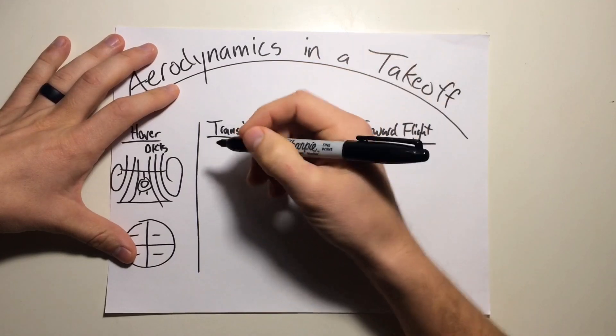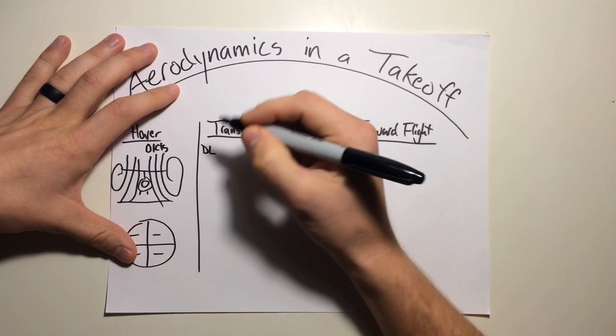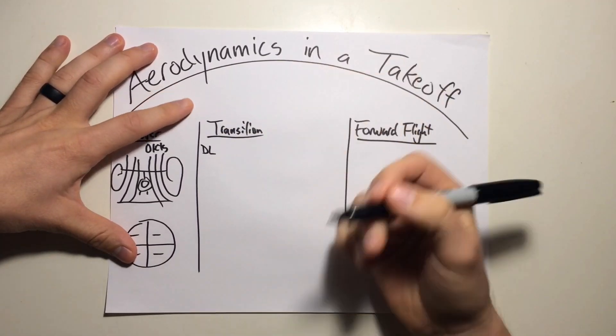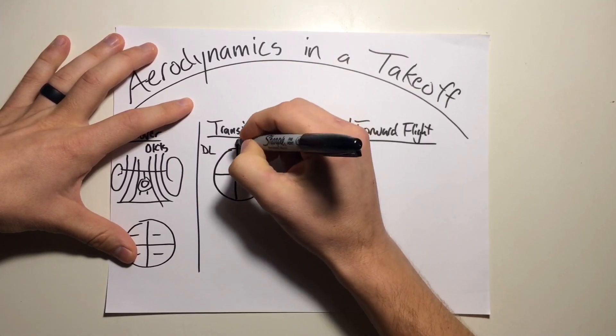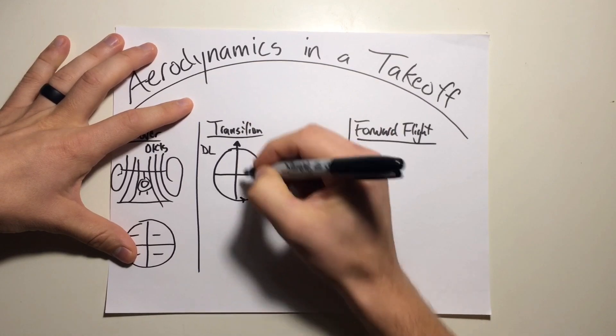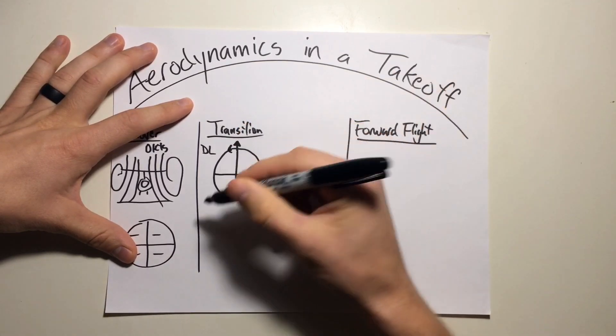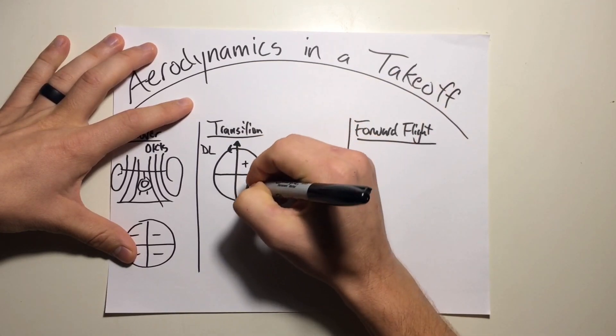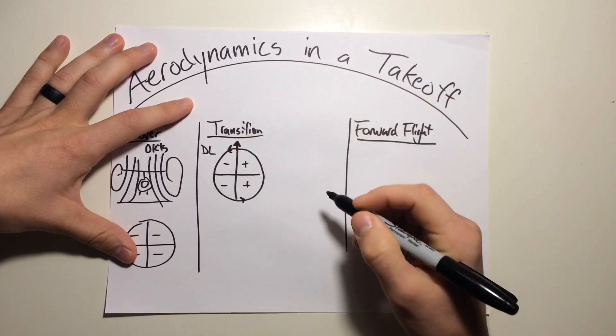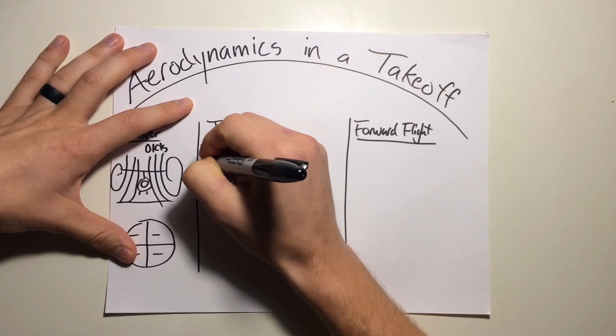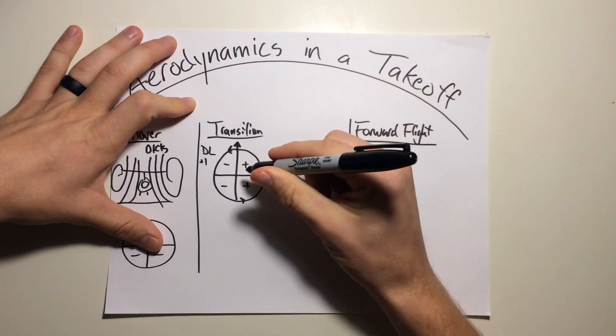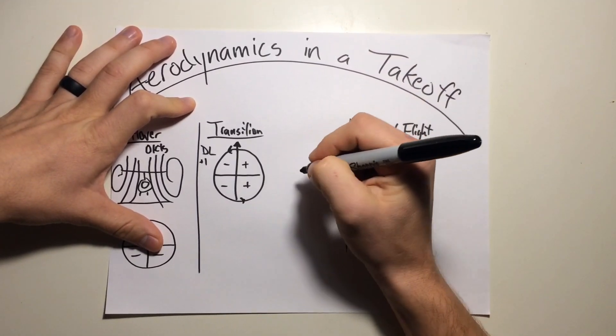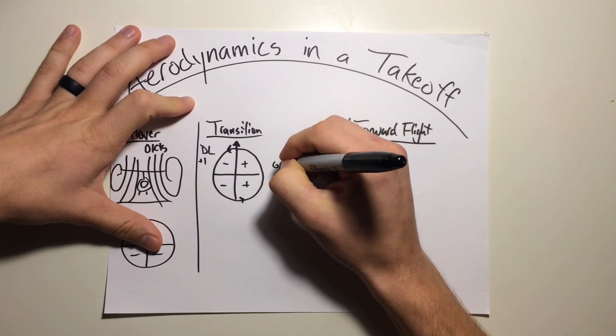As we start to transition forward, we're going to get into things like dissimetry of lift. It's a difference in lift in the advancing and retreating portion of the rotor disc. So if our rotor system is going this way, we'll say counterclockwise just like in all the other videos, the advancing side is creating more lift than the retreating side. This dissimetry of lift occurs at any kind of airspeed, so greater than zero knots of airspeed. But we can't just leave it at this. Due to gyroscopic precession, everything manifests 90 degrees later.